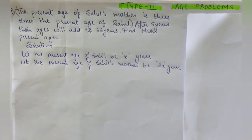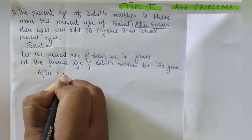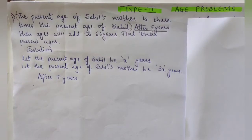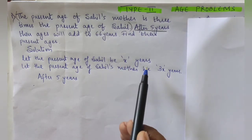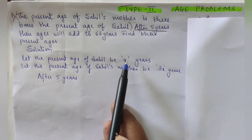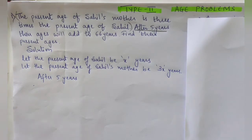Next, it is given that after five years their ages will change. If your present age is 15 years, after five years it will be 20 years — that is 15 + 5. Similarly, if Sahil's present age is x years, after five years it will be x + 5. And Sahil's mother's present age is 3x, so after five years it will be 3x + 5.